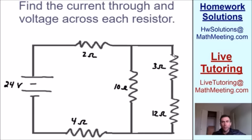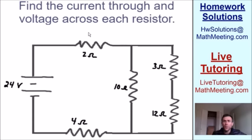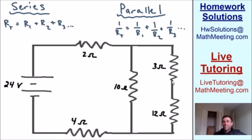Let's get started with this example. We need to find the current through and the voltage across each resistor. To do this, our first step is to find an equivalent circuit — we need to simplify this circuit so there's only one resistor. To do that we'll use the two formulas at the top of the screen.